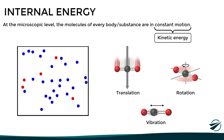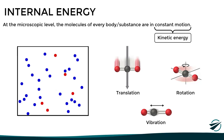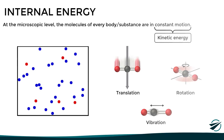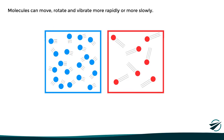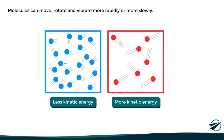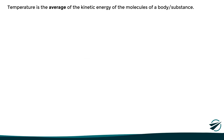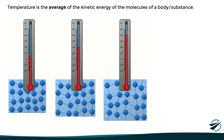With this in mind, the molecules of a certain object or substance can move, rotate, and vibrate more rapidly or more slowly, depending on their internal energy. If they move slowly, then we say that they have less kinetic energy, while if they move faster, it means that they have more kinetic energy. Understanding all this, we can now move on to the actual concept of temperature: temperature is the average of the kinetic energy of the molecules of a body or substance.